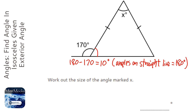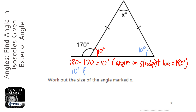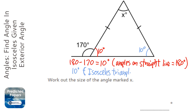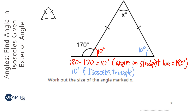The next angle I can work out is this one, and it's going to be 10 degrees as well. It's 10 degrees because it's an isosceles triangle, and the bottom two angles are always equal in isosceles triangles. That's assuming the two equal lengths are on the left and right — so these two are. If it's upside down, then clearly it's going to be the top two.